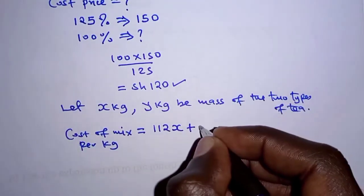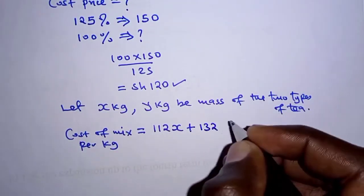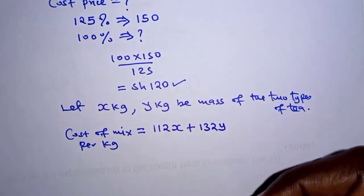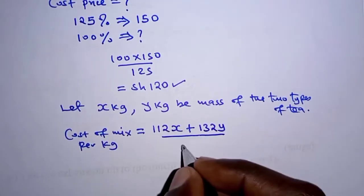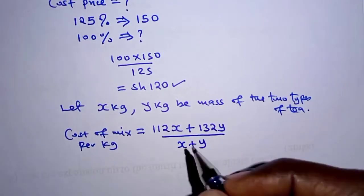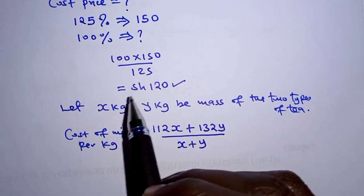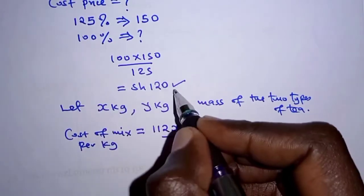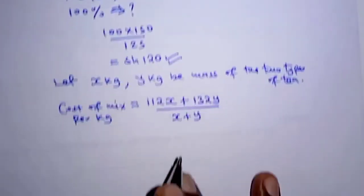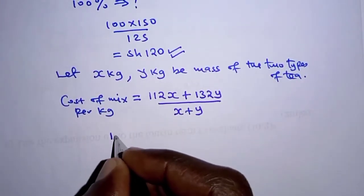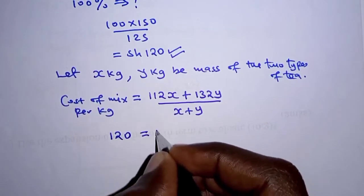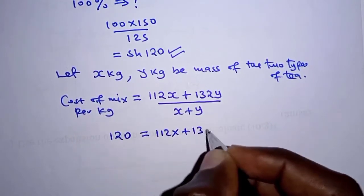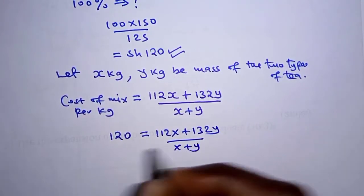For the second type, the cost is 132 shillings per kilogram and there are y kilograms, giving 132y. We divide the total cost by the total mass x plus y. Since we already determined the cost price is 120 shillings per kilogram, we set 120 equal to 112x plus 132y over x plus y.